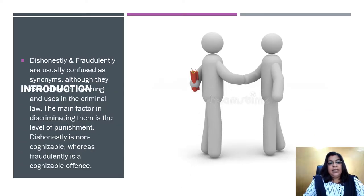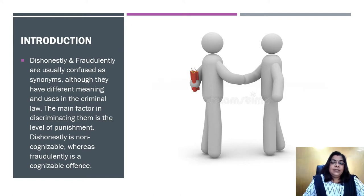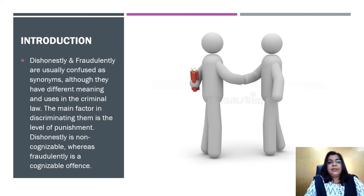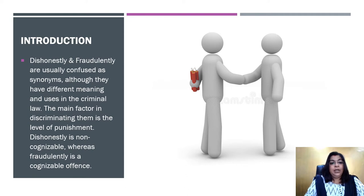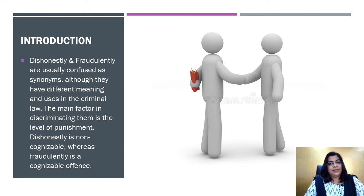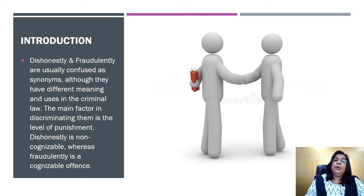Let's start with the introduction. As I said earlier, dishonestly and fraudulently are considered similar terms, but they are different. Why are they different? Because IPC — what is IPC? IPC is a substantive law, and in it we study what is crime and what is the punishment pertaining to that particular crime. So if we talk about dishonestly and fraudulently, there is a very big difference because dishonestly is a non-cognizable offense, whereas fraudulently is a cognizable offense. I have already explained what cognizable and non-cognizable is in my previous video — you may refer to that.